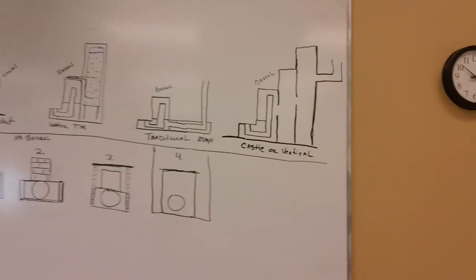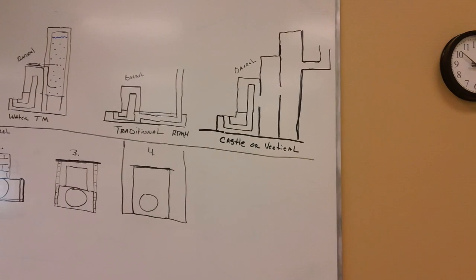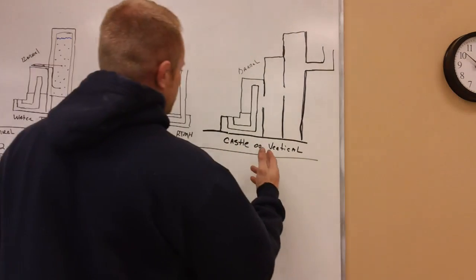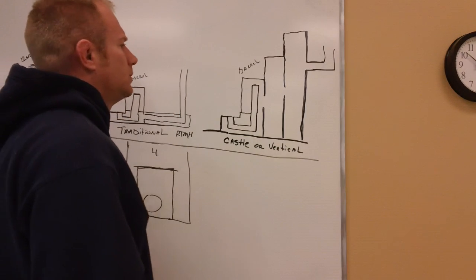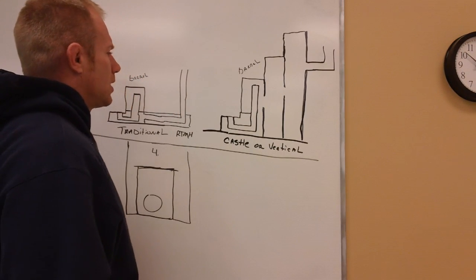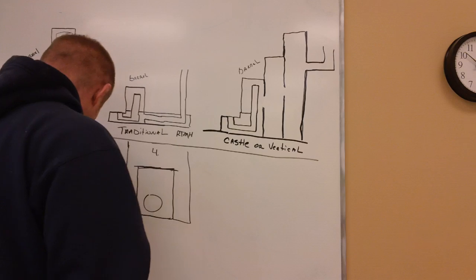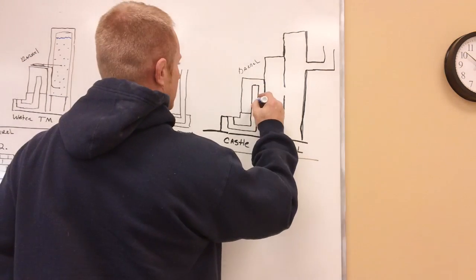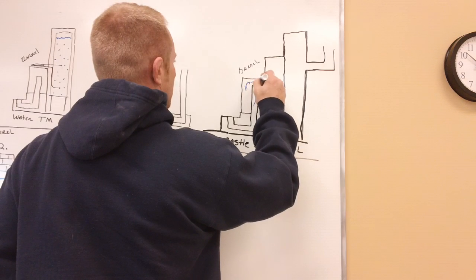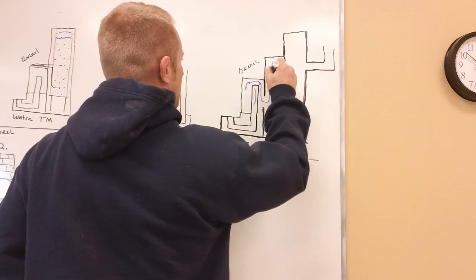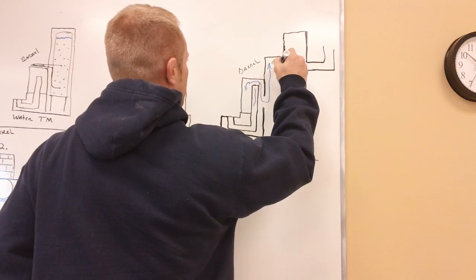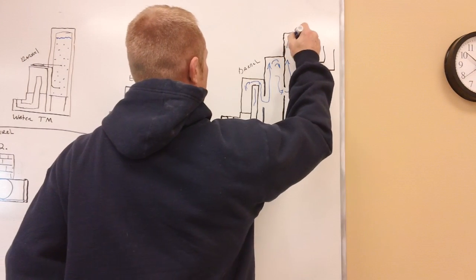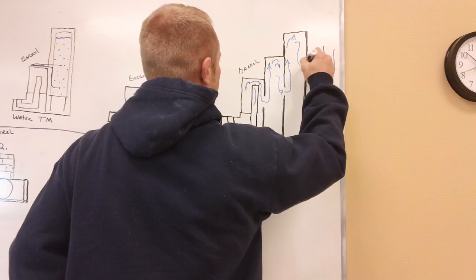This is a castle or vertical mass rocket stove. What happens is as the fire comes up the tube and rolls over and burns out, it will roll up in the top here, around, come down, roll up in the top here, come down and then go out.